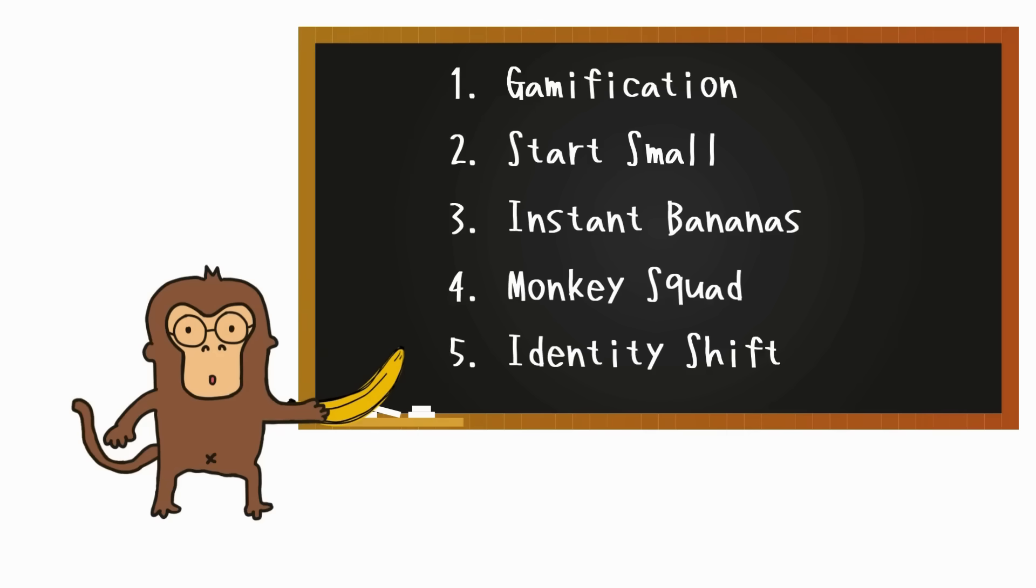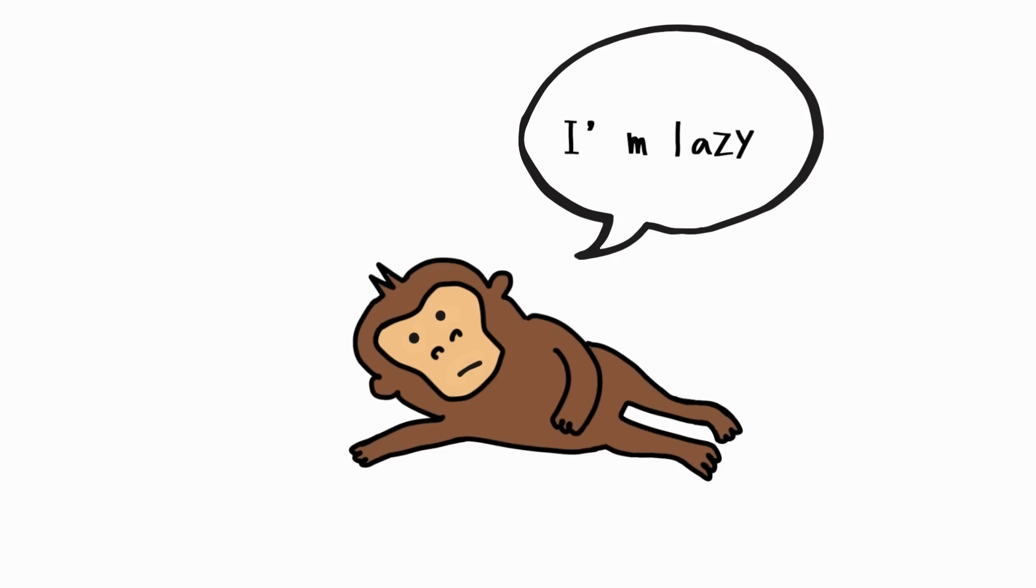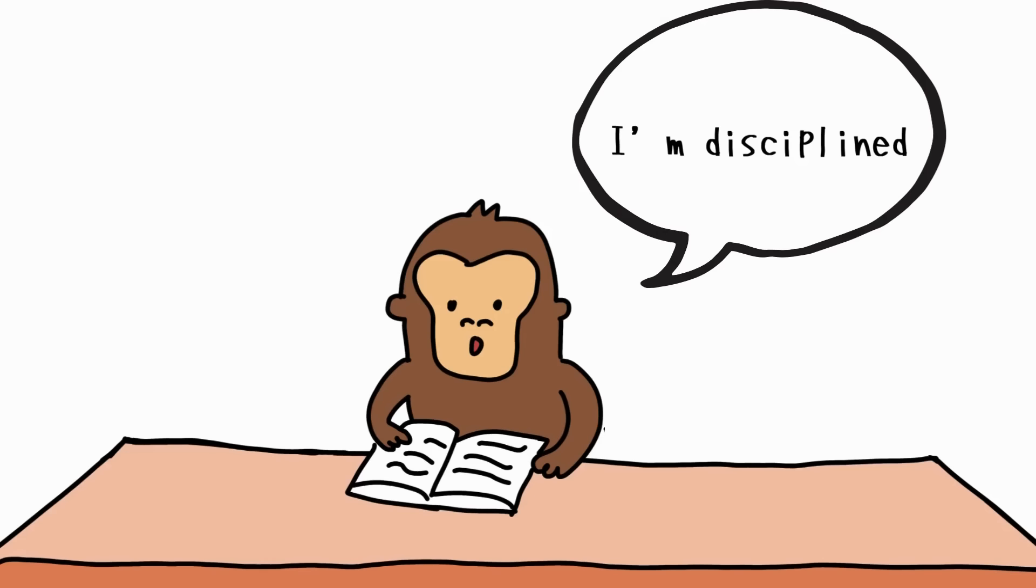Number 5: Identity shift. Monkey acts according to identity. If Monkey says, I'm lazy, he stays lazy. If Monkey says, I'm disciplined, he starts behaving that way. Behavior follows belief.